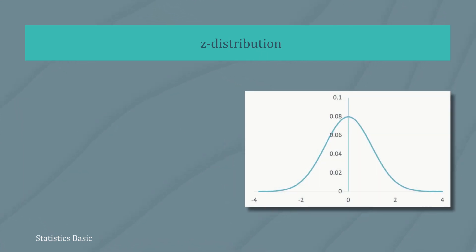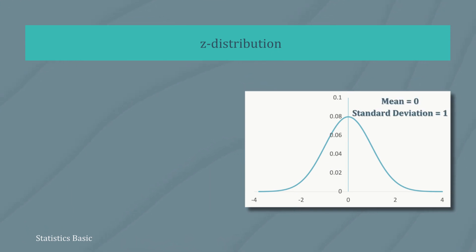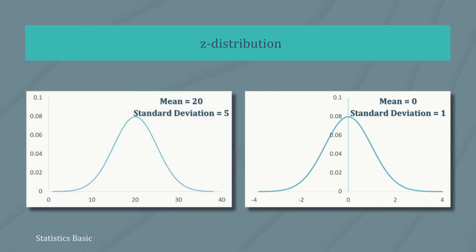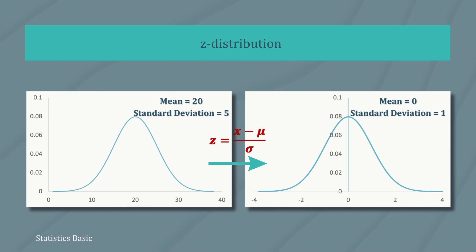The standard normal distribution is a special case of the normal distribution where the mean of the distribution is 0 and the standard deviation is 1. A normal distribution with a mean of mu and a standard deviation of sigma can be normalized to a standard normal distribution by using the z-score formula: z equals x minus mu divided by sigma. This is one of the ways to compute the probabilities for a normal distribution.